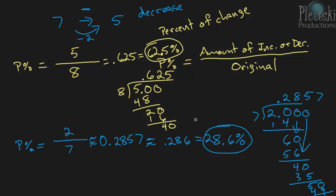So 286 thousandths becomes 28.6%. And that's the percent of decrease, the percent of change or the percent of decrease is 28.6%.